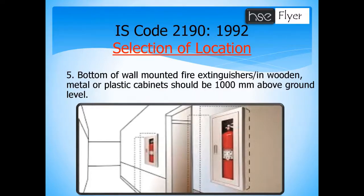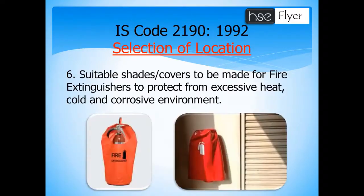This IS code also states that if any fire extinguisher is wall-mounted — whether in the open, in wooden boxes, or in plastic cabinets — the bottom of the extinguisher should be 1000 mm above ground level, which is approximately 3.28 feet from the ground.